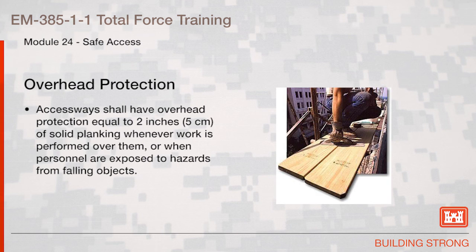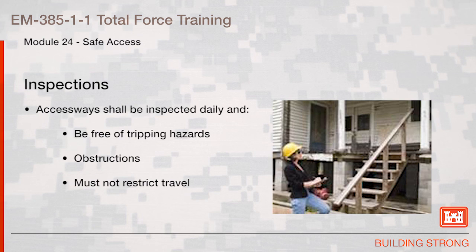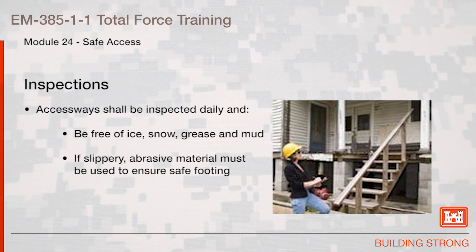Overhead protection: Access ways shall have overhead protection equal to 2 inches solid planking whenever work is performed over them or if personnel are exposed to hazards from falling objects. Access ways shall be inspected daily. They shall be free of tripping hazards, obstructions shall not restrict travel, and shall be free of ice, snow, grease, and mud. If slippery, abrasive material shall be used to assure a safe footing.